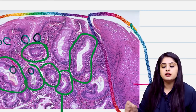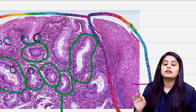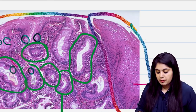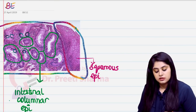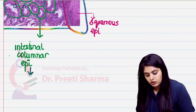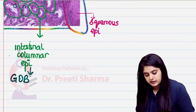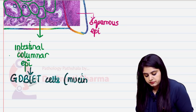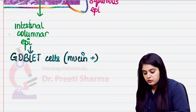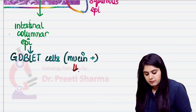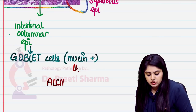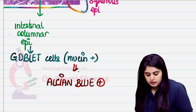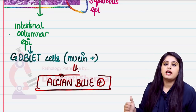The goblet cells contain mucin. The reason we specifically call it intestinal columnar epithelium is because it has goblet cells filled with mucin. For the special stain: mucin stains positive with alcian blue. So these goblet cells will be alcian blue positive.